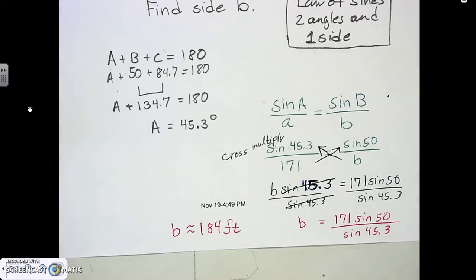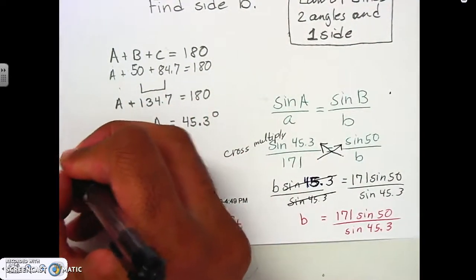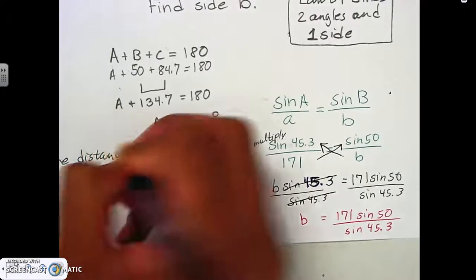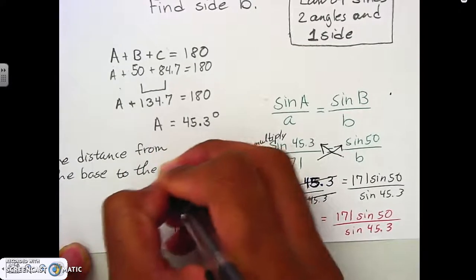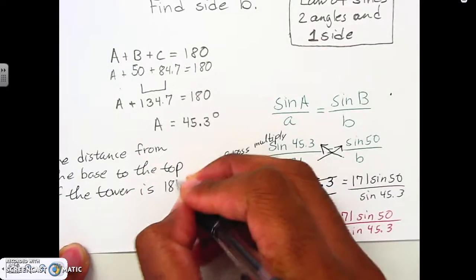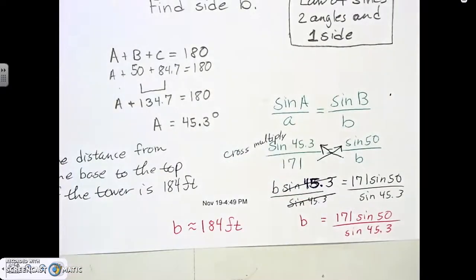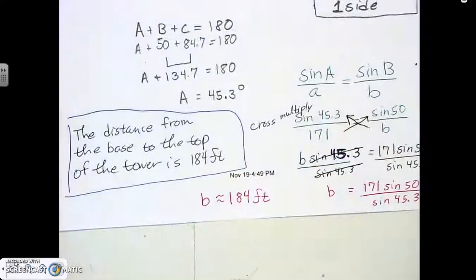With word problems, you need to work through them — you guys are smart enough to do this. Also, make sure you write your answer in a complete sentence, because it's not just '184 feet' — it needs to say what it means. So write: 'The distance from the base to the top of the tower is 184 feet.' That's it, that's all she wrote.